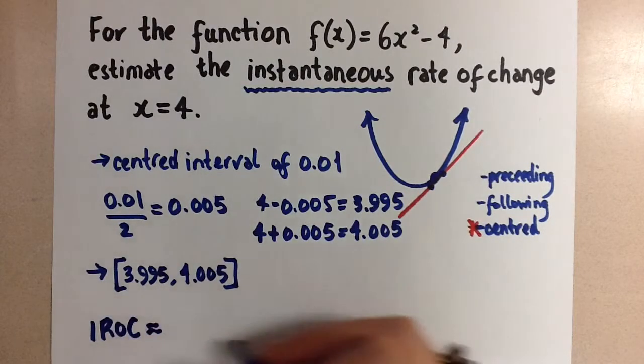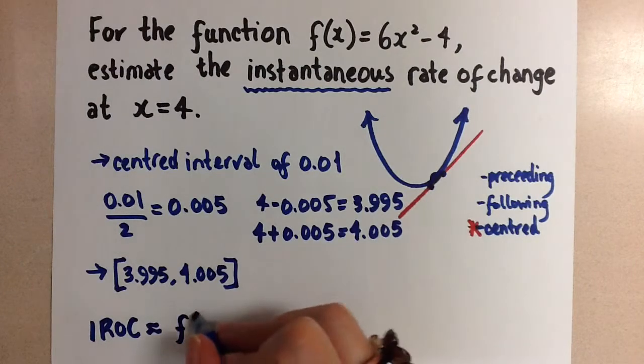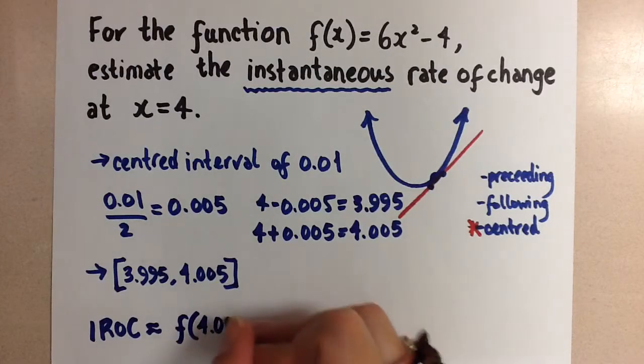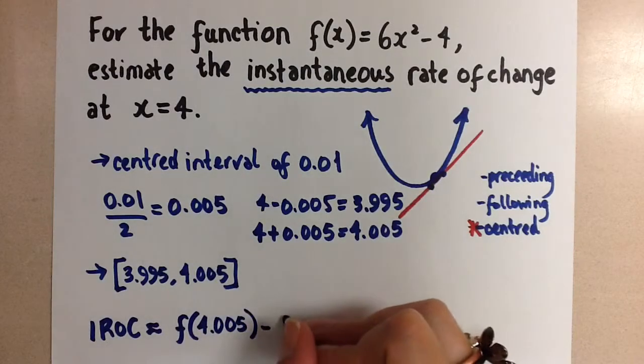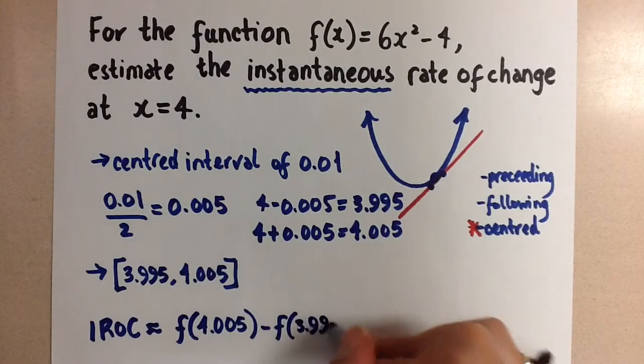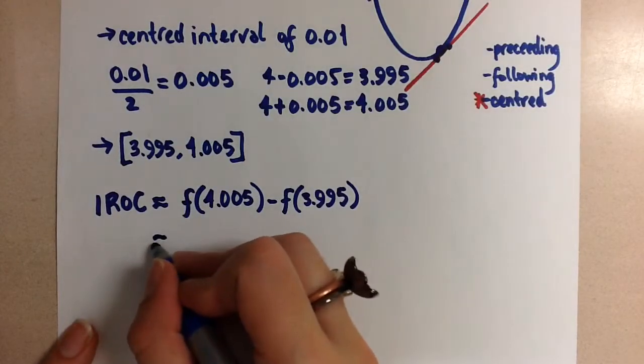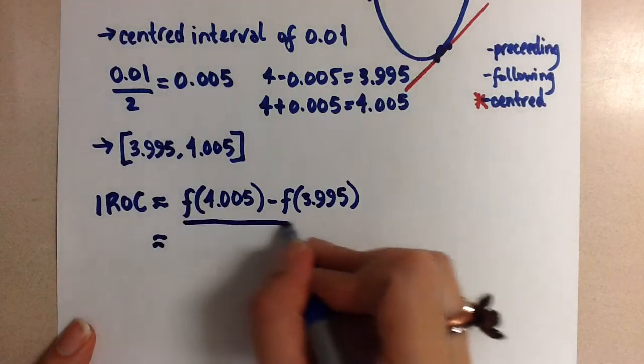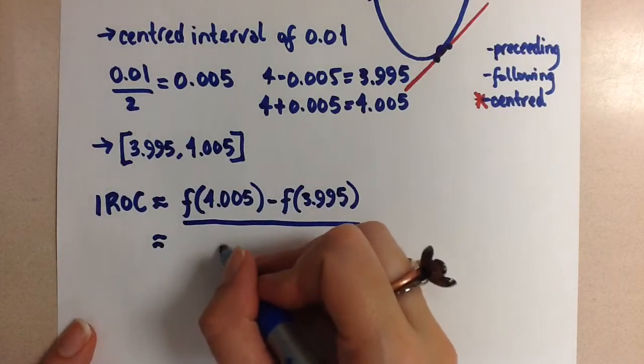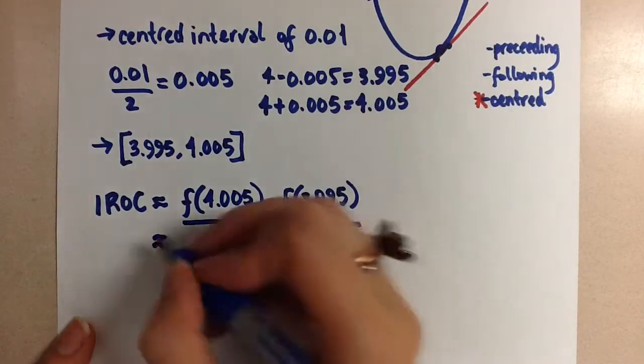We're going to approximate this, and it says to do f at x2, which is our right bound for the interval, minus f at x1, which is our left bound for the interval. Oh sorry, and then we have to divide by x2 minus x1. Let's not forget that denominator.